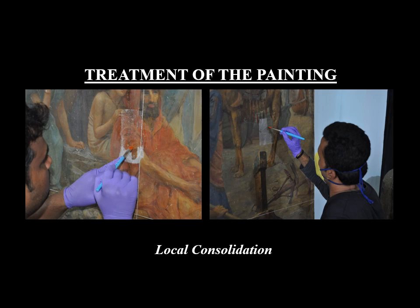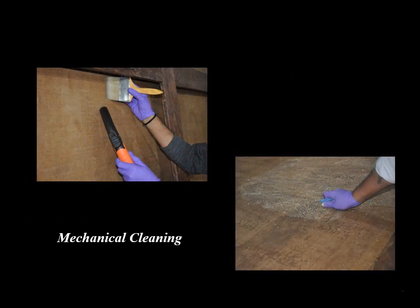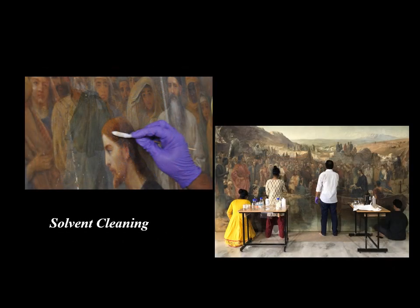Now discussing the conservation treatment: initially, local consolidation was required to stop further losses as flaking was prominent. A vinyl acetate polymer resin, which is non-aqueous, was used to consolidate the flaking areas with a facing of Japanese tissue paper. To remove the encrusted layer of dirt, mechanical cleaning was done from the back side of the painting only. After that, solvent cleaning was done with the use of hydrocarbons to remove the previous interventions and to minimize the white stains present all over the painting.